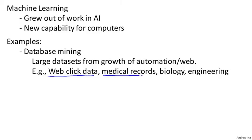Medical records: with the advent of automation, we now have electronic medical records, and if we can turn medical records into medical knowledge, we can start to understand disease better. Computational biology: biologists are collecting lots of data about gene sequences and DNA sequences, and machine learning algorithms are giving us a much better understanding of the human genome and what it means to be human. And in all fields of engineering, we have larger and larger data sets that we're trying to understand using learning algorithms.